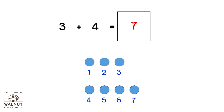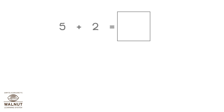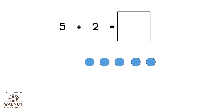That is the answer. How do we do 5 plus 2? We draw 5 dots. Then we draw 2 more dots.